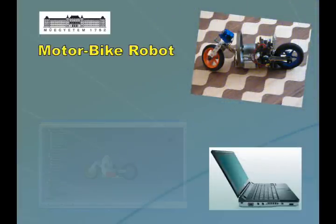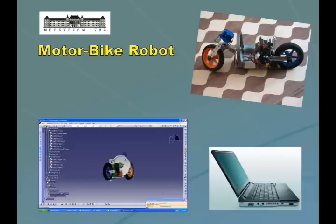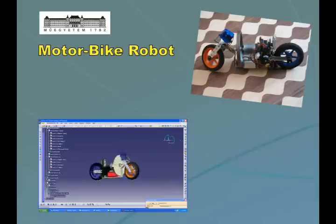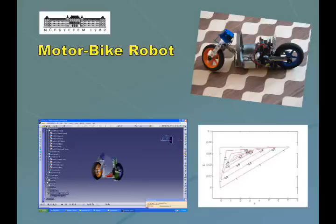First of all, the bike was designed in CATIO software. Considering the mechanical parameters, the stability domain was obtained for a discrete-time PD controller.